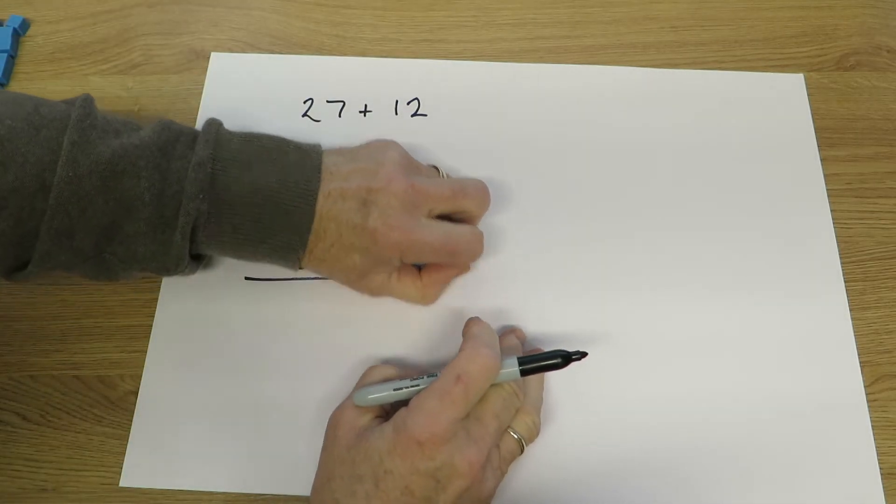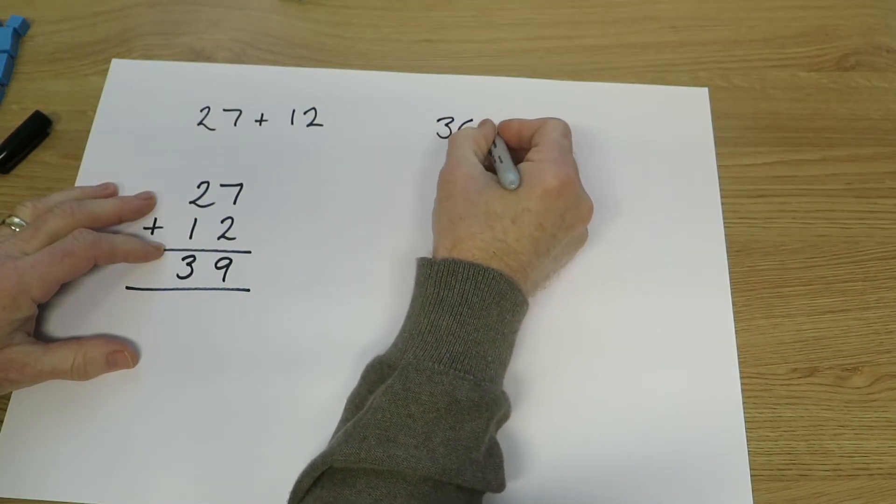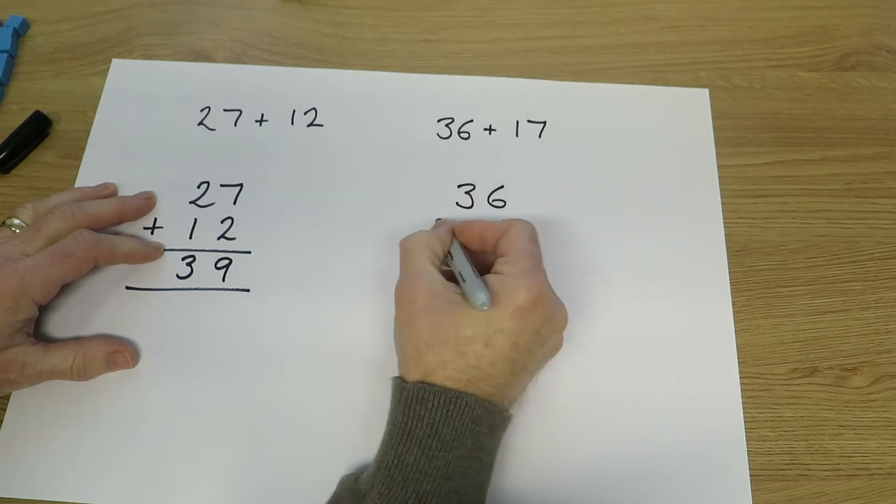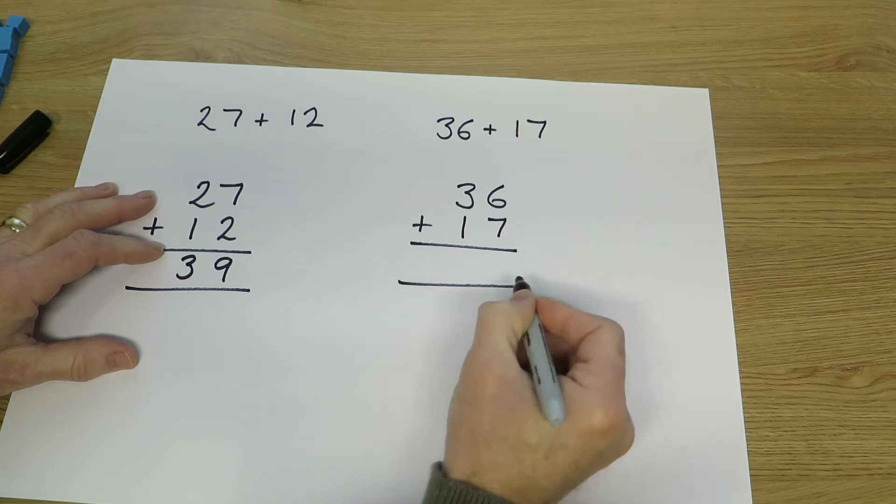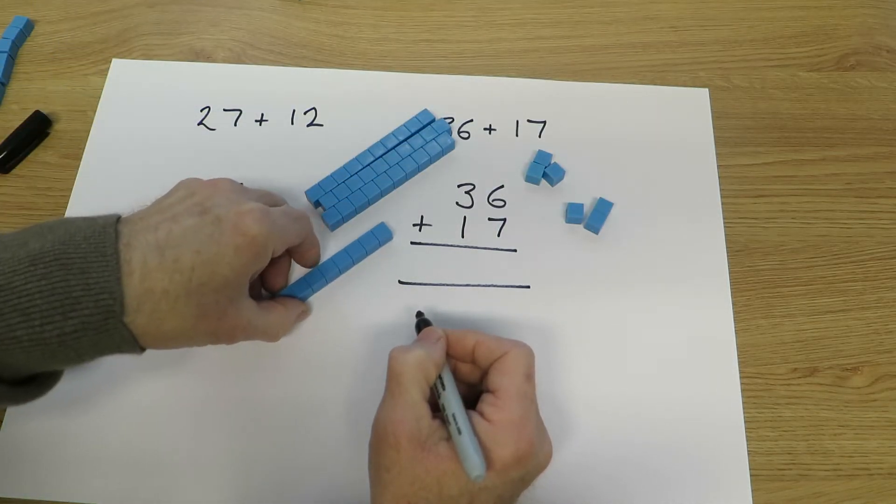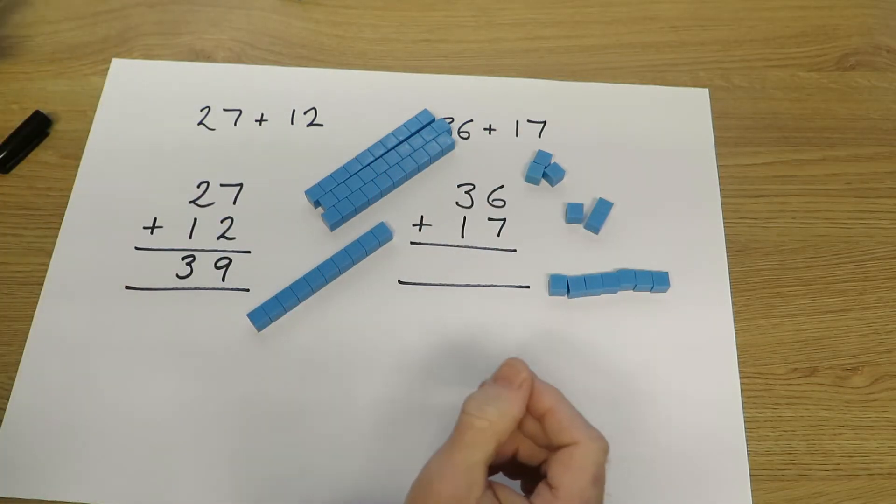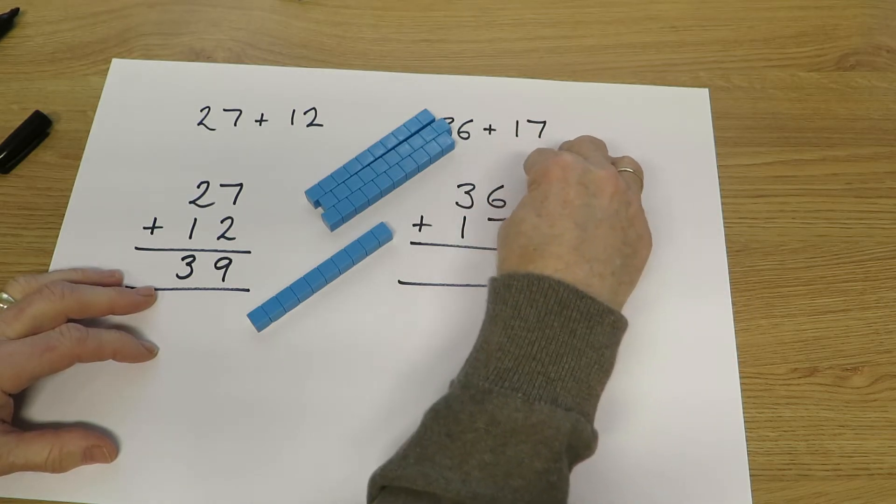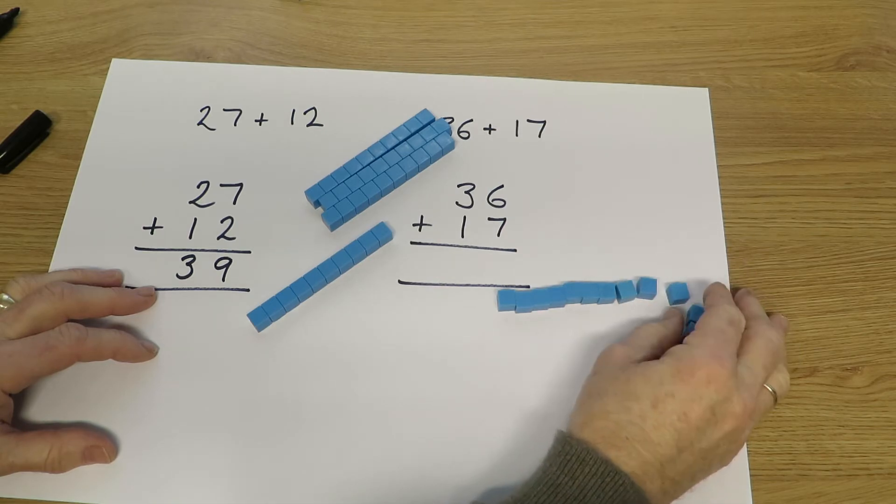But what this equipment shows best is questions such as 36 add 17. Put this out in columns: 36 add 17, and get the equipment 36 and 17.